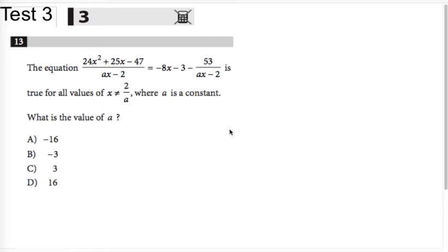You're given a rational expression equal to negative 8x minus 3 minus 53 over the same denominator that occurs in the first rational expression. You're told that this statement is true for all values such that x is not 2 over a, which is the value that would make the denominator 0, where a is a constant. What is the value of a?